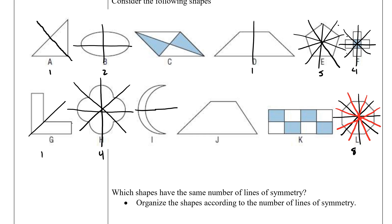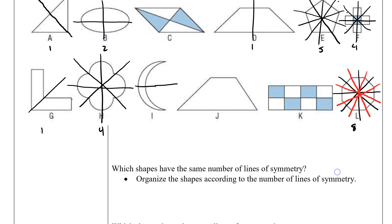So here is the rough work that I did. I made sure that I counted up all the lines of symmetry. With one line of symmetry, we have shape A, shape D, and shape G. With two lines of symmetry, we have B. Oh sorry, I forgot one here. Don't forget about that one.